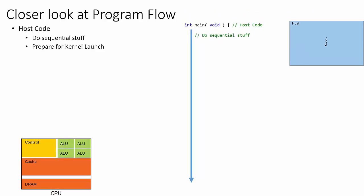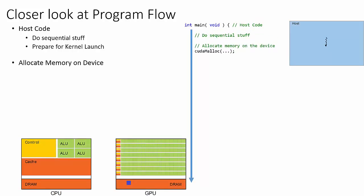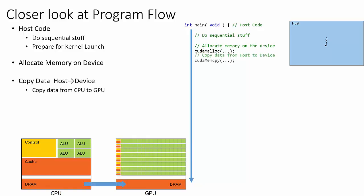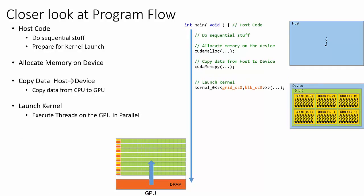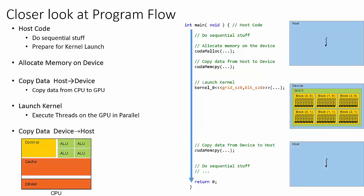Let's take a closer look at the flow of a CUDA program. One thing to remember is that the host and device have different memory regions. To operate on any data inside a kernel, we first need to allocate memory on the device. Next, we copy any relevant data into the device's memory region. This copying of data between host and device is one of the most important and limiting aspects that drives the flow of a CUDA program. We then launch the kernel with the specified grid and block dimensions. When we need to retrieve the results, we copy the data back from the device to the host.